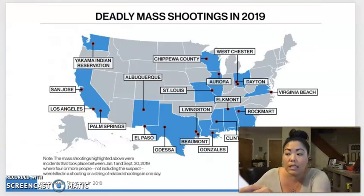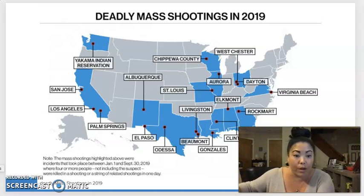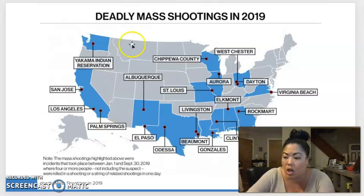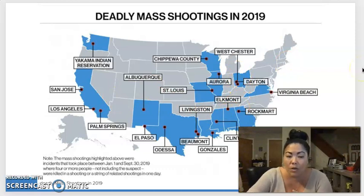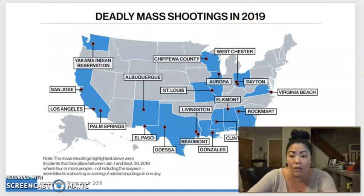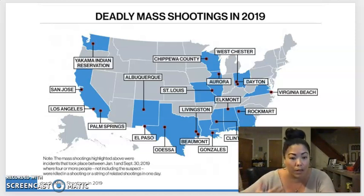2019 was a rough year for mass shootings. If you use the definition of four or more people killed in a shooting, not including the shooter, we saw a significant number of shootings across the country. They seem to have faded from memory pretty quickly, or they barely even make the news anymore. It seems as though they're becoming less shocking because it's commonplace, and there's a whole body of research on the public becoming desensitized to this information.